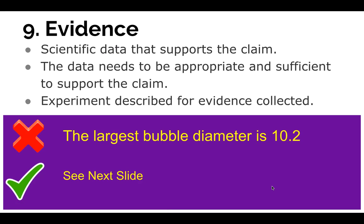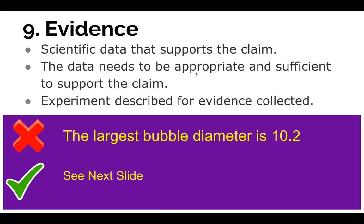Moving on to our evidence. Your evidence is your numbers from your data table. It needs to be sufficient data that supports your claim and it has to be appropriate, with the experiment described for the evidence collected — one or two sentences that summarize your procedure to explain how you got these numbers. A bad example is: 'The largest bubble diameter is 10.2.' It's missing units, which is really important, and it doesn't compare to anything. It's not sufficient because you're not comparing it to the smallest bubble, and we don't know how those bubbles were made.